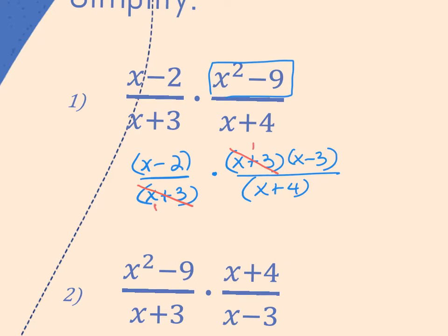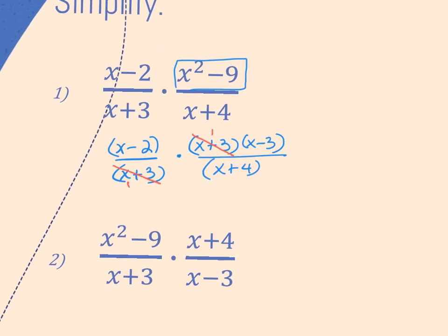Nothing else can be simplified. I'm leaving the answer in factored form in binomials. I can't try to reduce the 2 and the 4, or an x and an x, because remember they're attached.